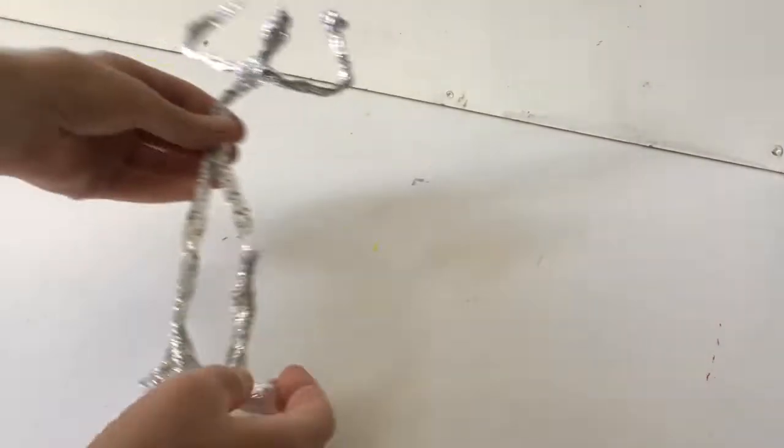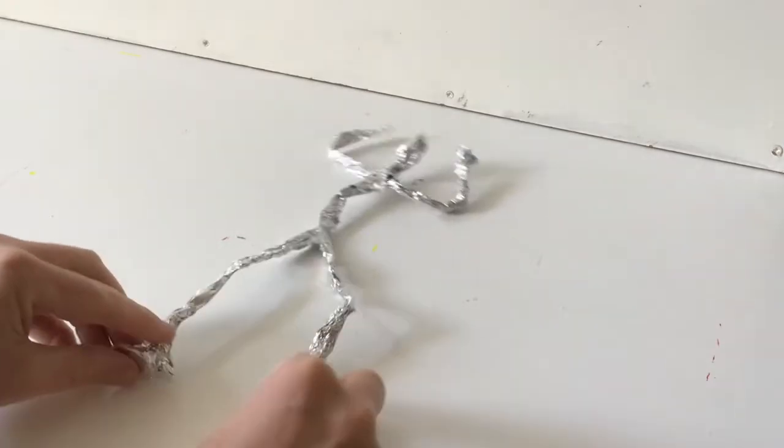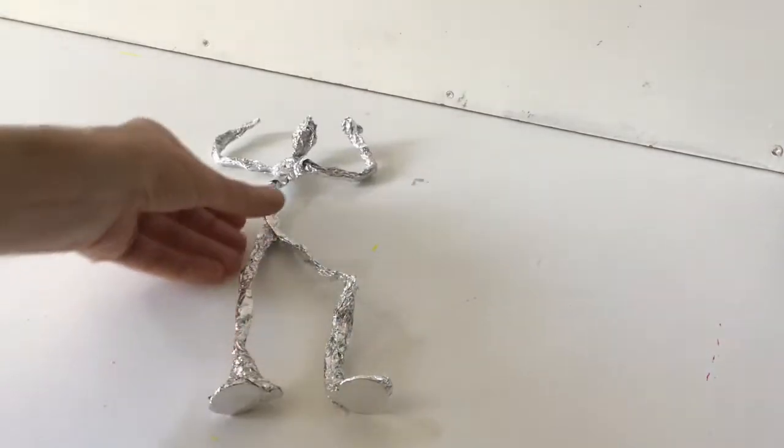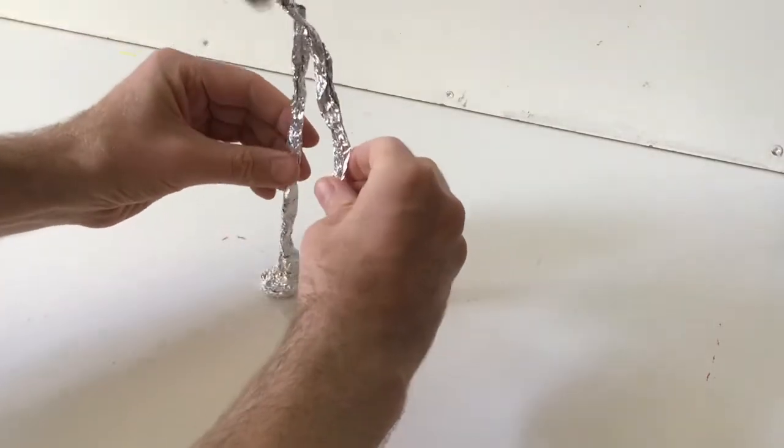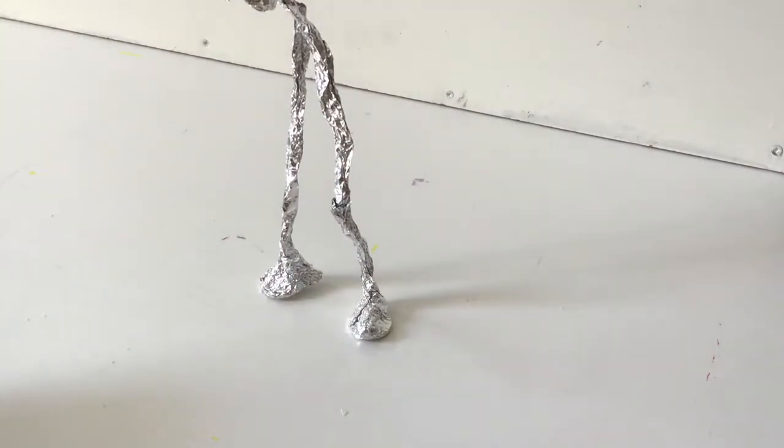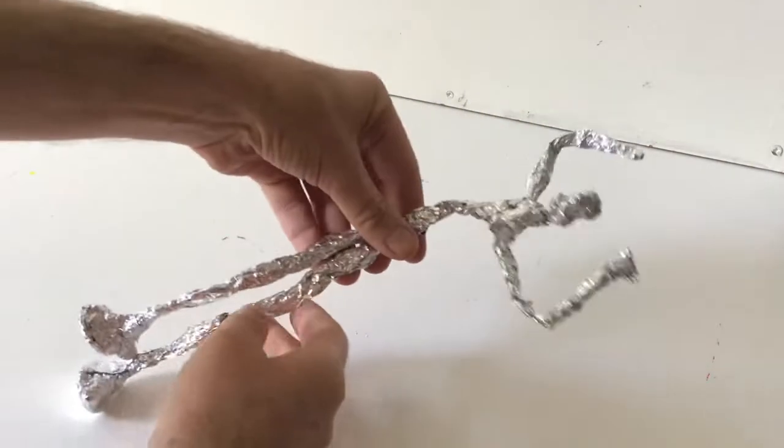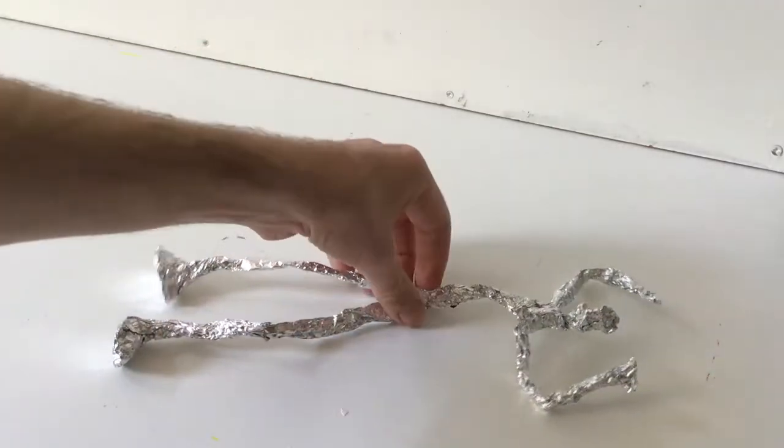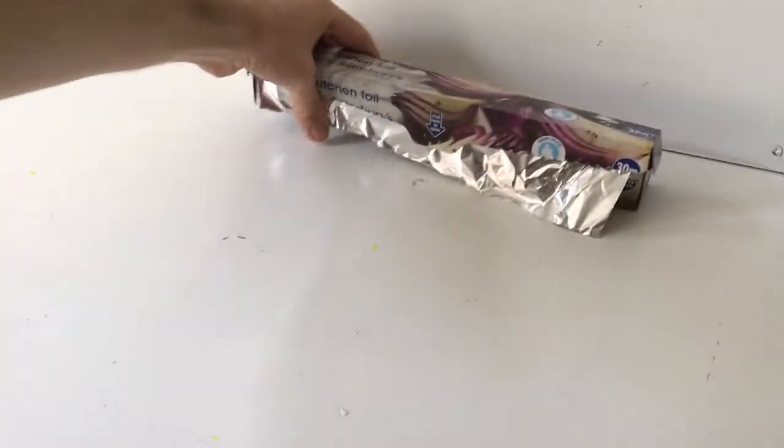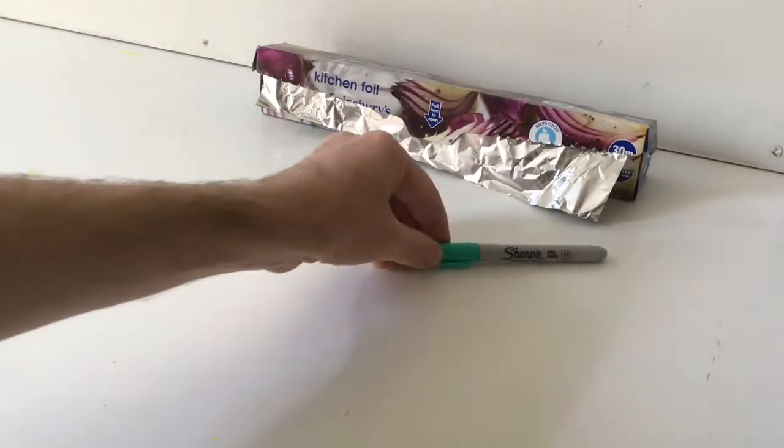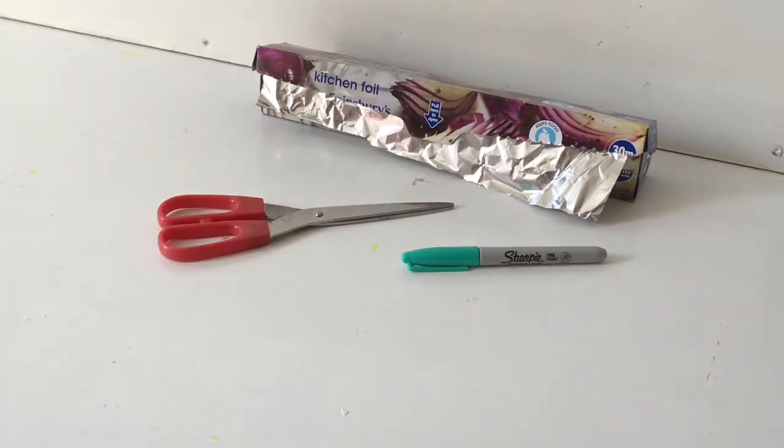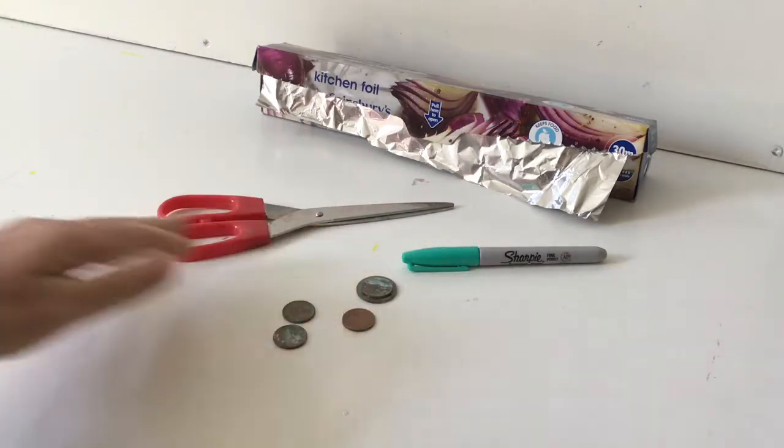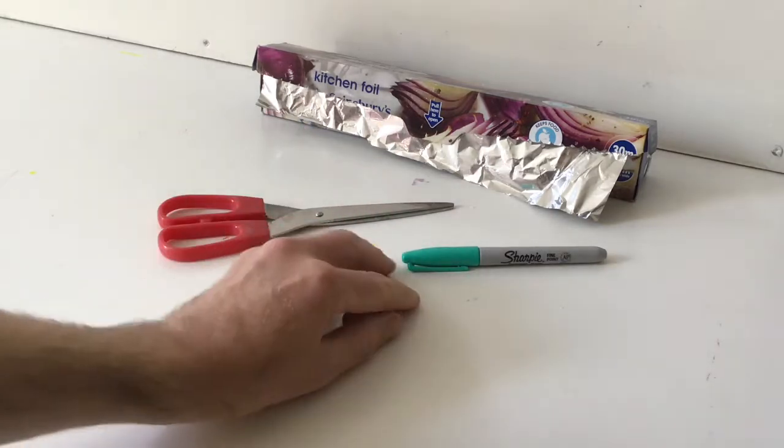So what you'll need today to make this one, here's one that I've made before and it should be able to stand up on its own as well. So you'll need some tin foil and a felt tip pen any kind, scissors, and just some pennies or any coins really just to help it stand up.